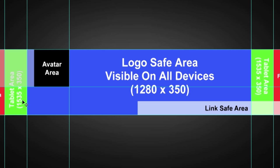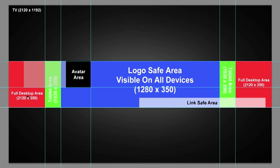This green area here is where you're going to be visible on tablets, so it's from here to here including this blue area as well. Then the red area is going to be visible on computers, desktops, laptops, etc. So you're going to have the whole area visible here and I'll show you exactly what that looks like in a few minutes.